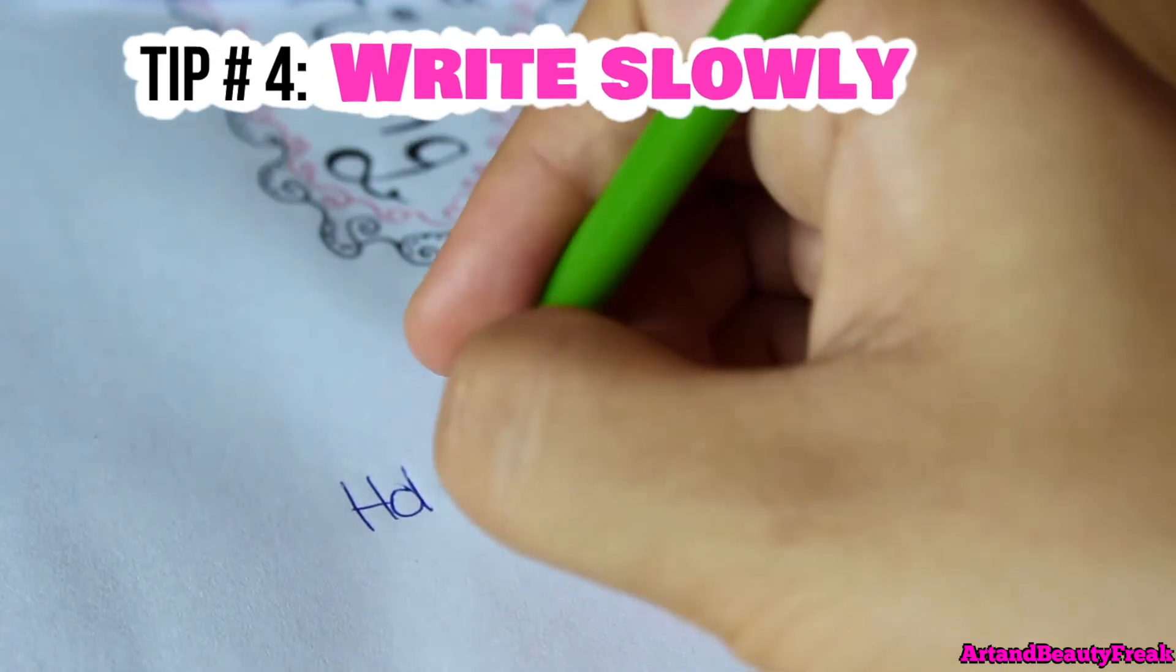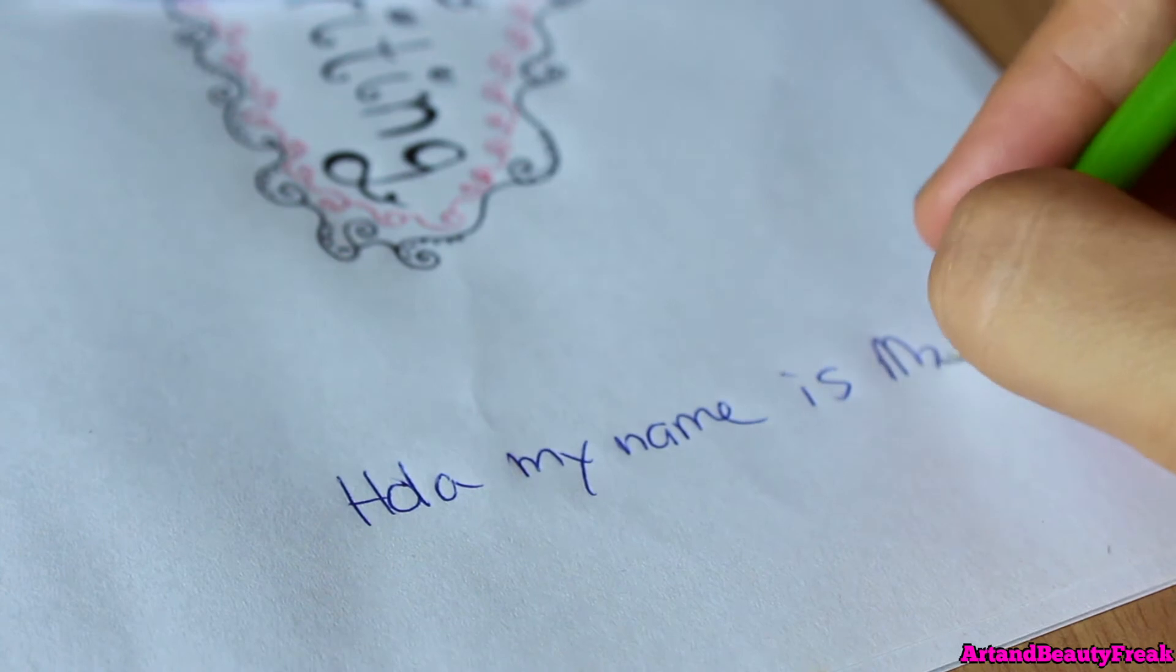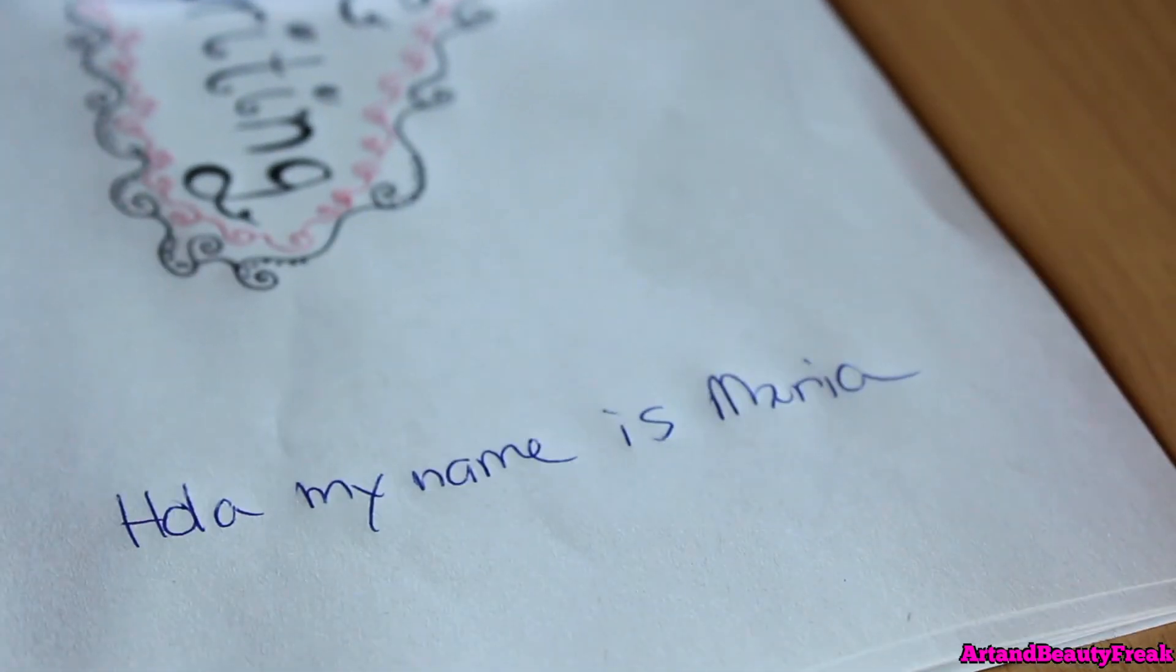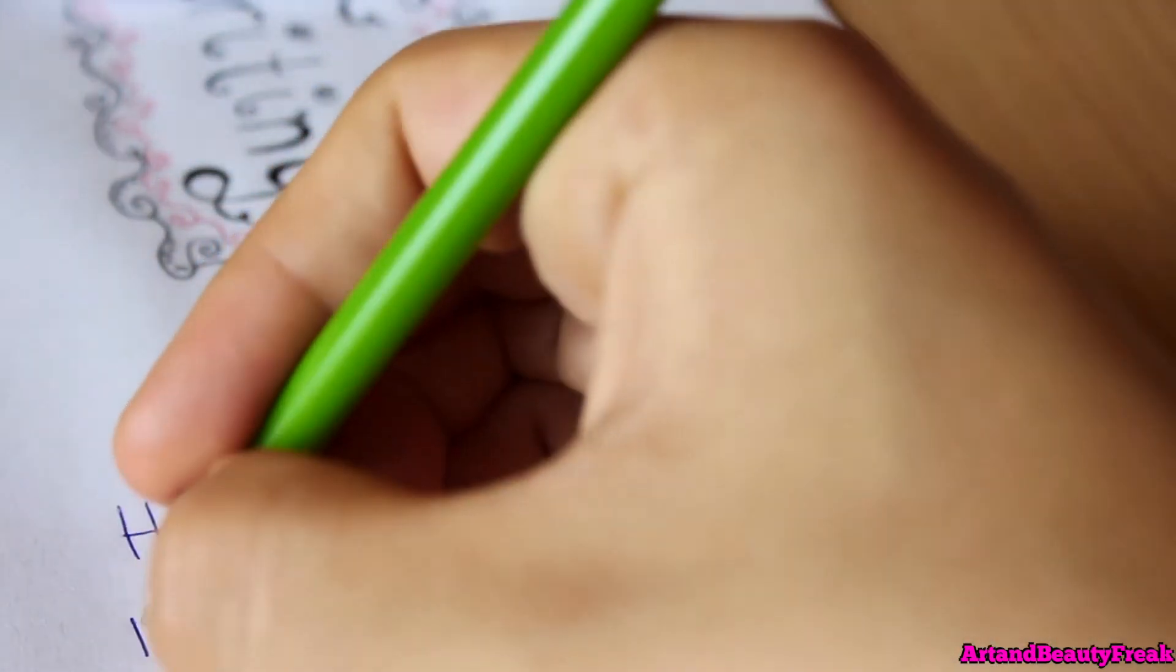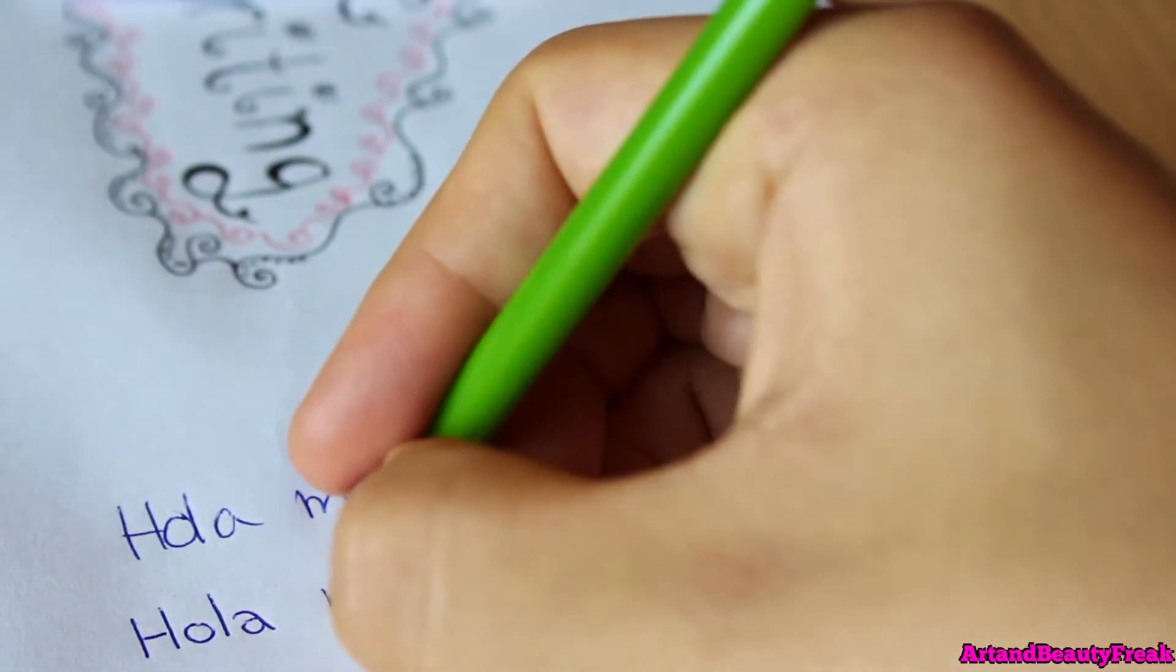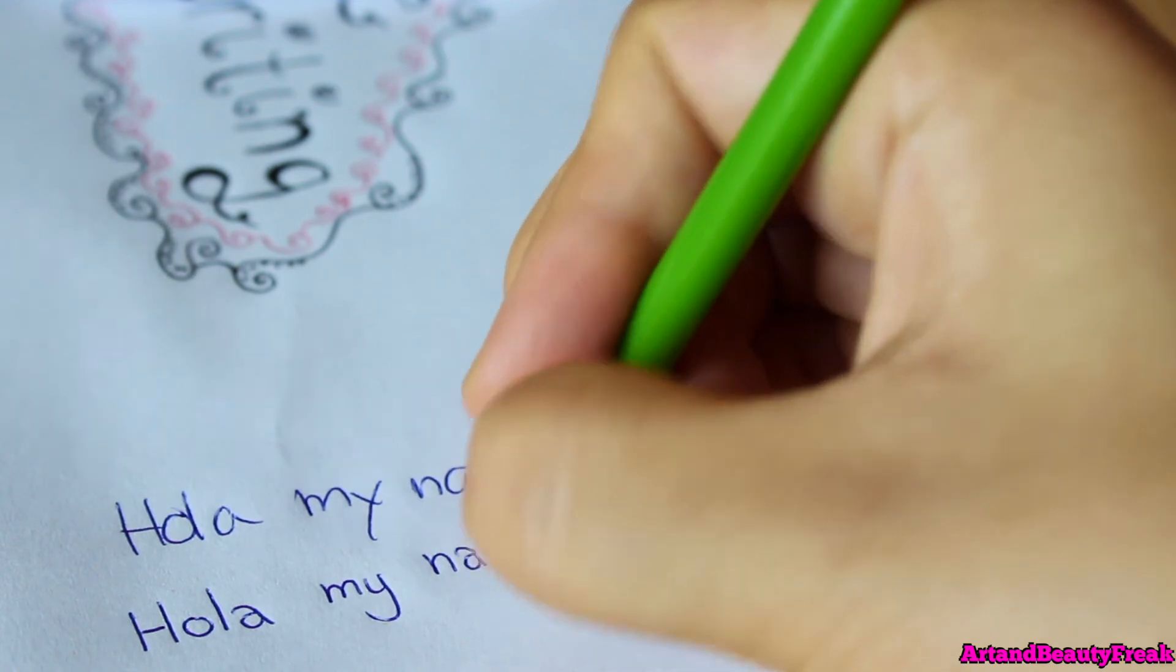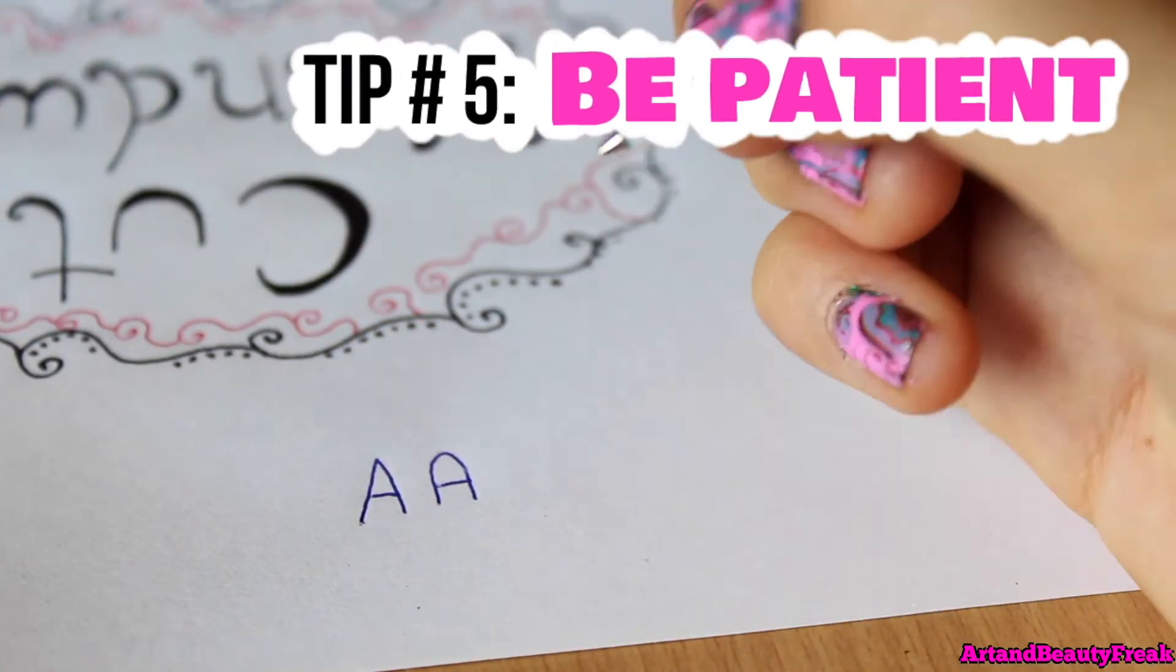Tip number four is to write a bit slower, especially when you're practicing. The reason why so many people have sloppy handwriting is because they're hurrying up writing down things. If you write slower, your handwriting will improve much faster because you'll be able to concentrate a lot more and not just speeding everything out. Once your handwriting has improved, then you can of course speed it up.